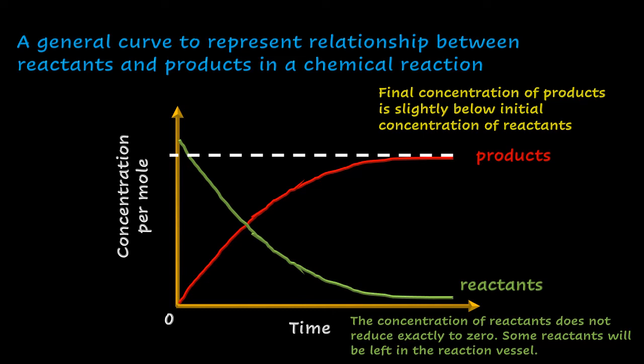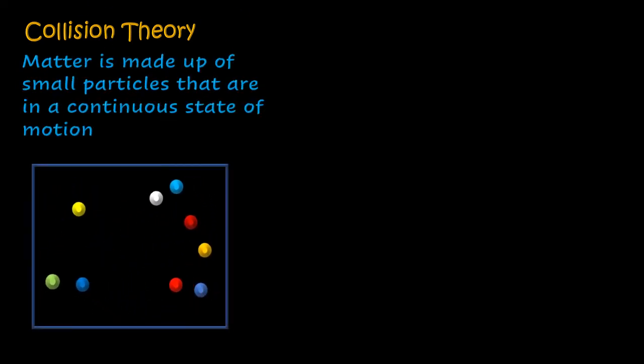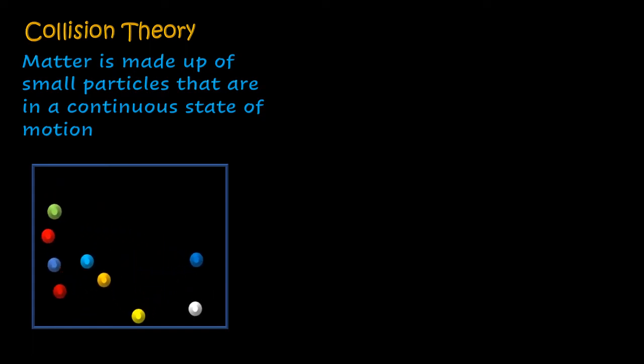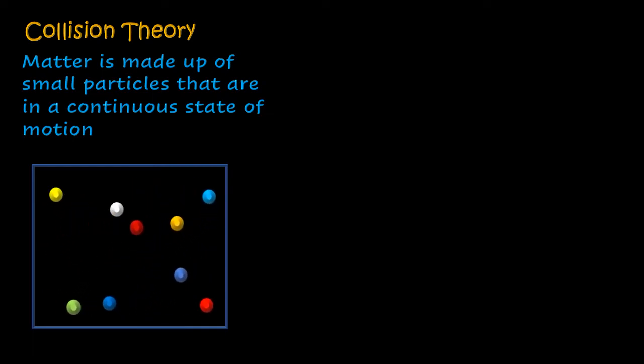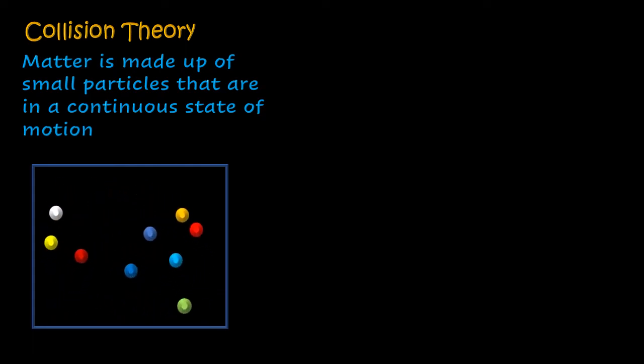Let us look at the theory associated with a chemical reaction — this is the collision theory. Matter is made up of small particles that are in a continuous state of motion. If you remember from form one chemistry where you looked at the kinetic theory of matter, this is what comes into play. Let us use the kinetic theory to understand what a reaction is in the light of collision theory.